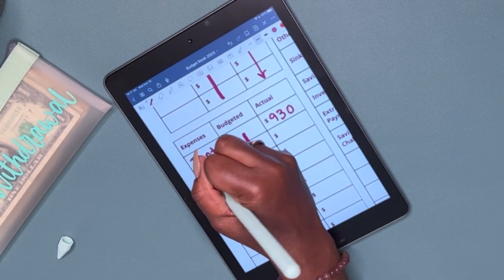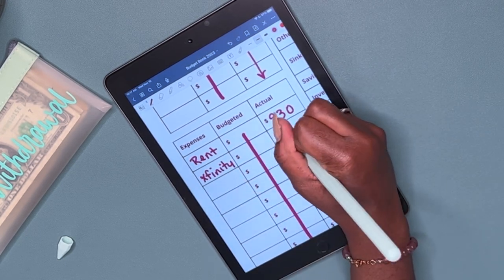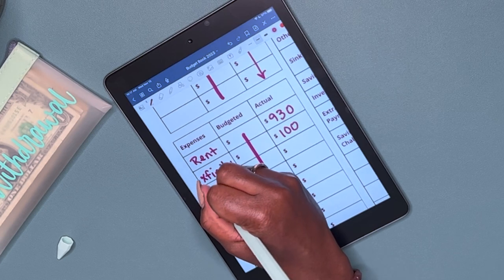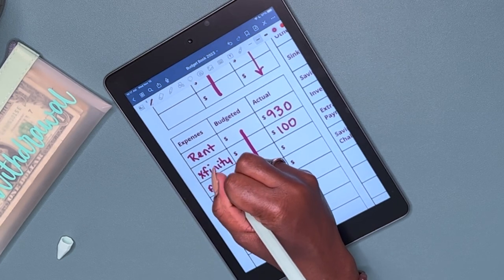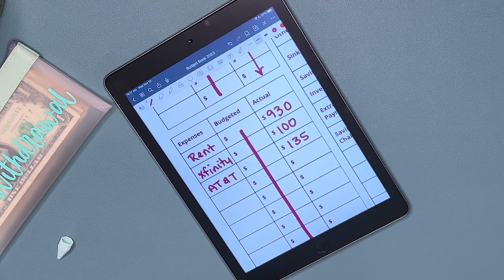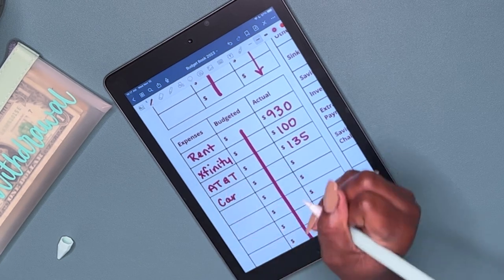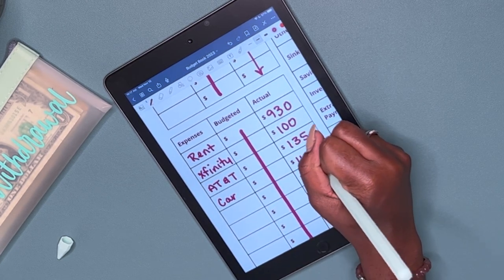Next one is going to be Xfinity, and that is $100. And then I have AT&T, and that's $135. Then I have my car payment, and that is $470.